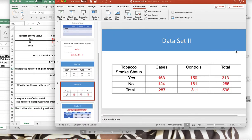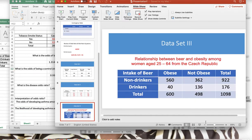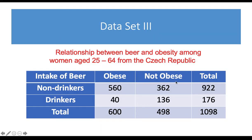The third dataset examines the relationship between beer consumption and obesity among women aged 25 to 64 from the Czech Republic, drawn from a research paper. This is a cohort study, and we will calculate risk ratios and also explore odds ratios.